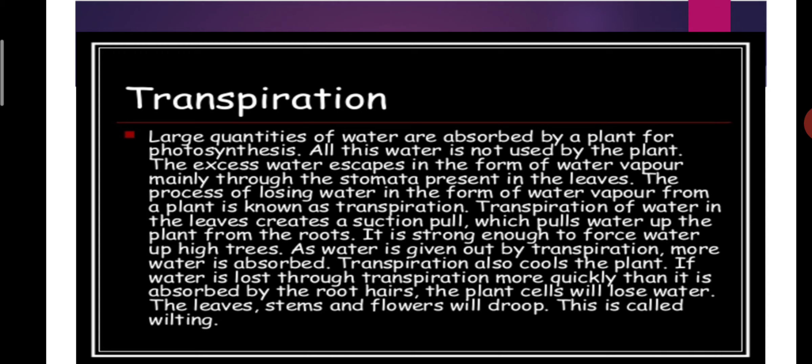Transpiration of water in the leaves creates a suction pull, which pulls water up the plant from the roots. This suction force allows water to move from the root part to the upper part, and it is strong enough to force water up even very high trees. As water is given out by transpiration, more water is absorbed.